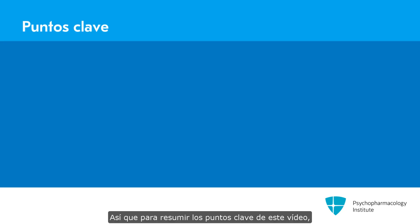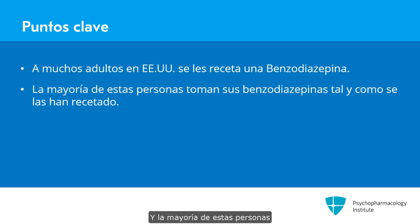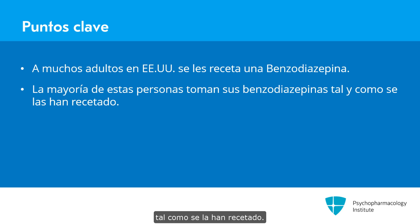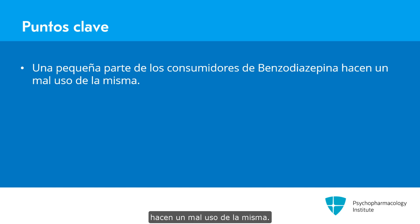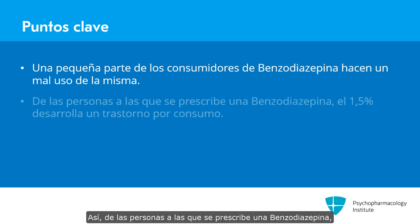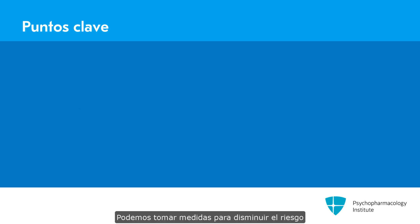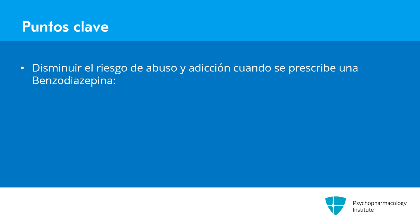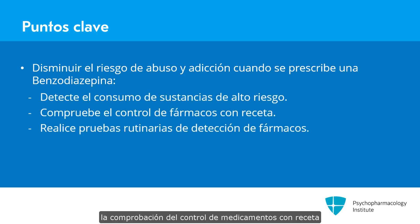To summarize the key points for this video: many adults in the U.S. are prescribed benzodiazepines, and the majority take them as prescribed — over 80%. A very small fraction misuse their benzodiazepine: of those prescribed, 1.5% develop a use disorder, which is 0.2% of the U.S. population. We can take steps to decrease the risk of misuse and addiction when prescribing a benzodiazepine, including screening for high-risk substance use, checking the prescription drug monitoring database, and utilizing routine drug testing.